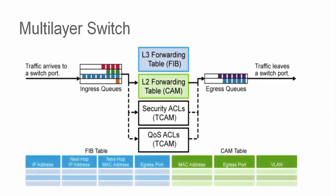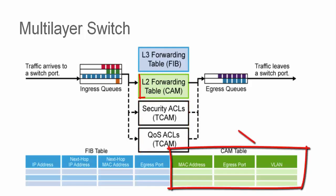A multi-layer switch maintains two main tables that are used in the routing and switching processes. These tables are known as the CAM and the TCAM table. The CAM table is comprised of layer 2 information and keeps a record of MAC addresses and the ports they are associated with. A typical switch performs what we call MAC-based learning, which is a process that populates the CAM table as each device on a given port generates traffic and the switch learns its MAC address when it sees the traffic.